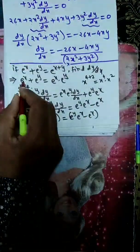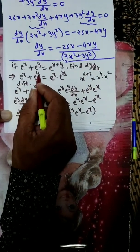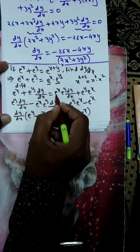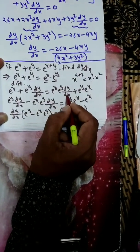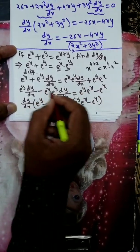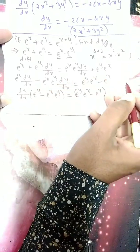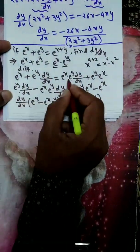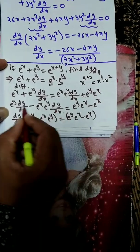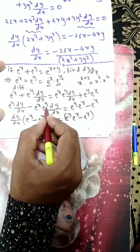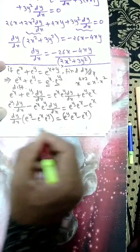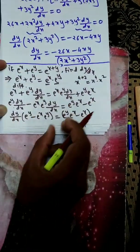For the right side, applying the u·v rule to e^x · e^y: first as it is times derivative of second gives e^x · e^y · dy/dx, plus second as it is times derivative of first gives e^y · e^x. Collecting dy/dx terms to one side: e^y dy/dx - e^x · e^y dy/dx = e^x · e^y - e^x. Factoring out dy/dx: (e^y - e^x · e^y) dy/dx = e^x · e^y - e^x, giving the required dy/dx answer.